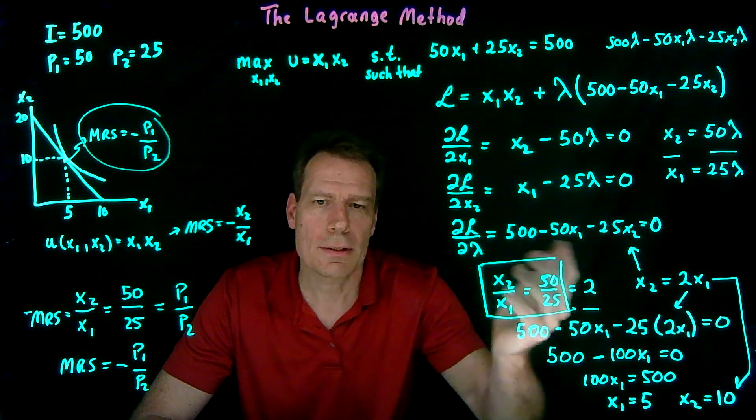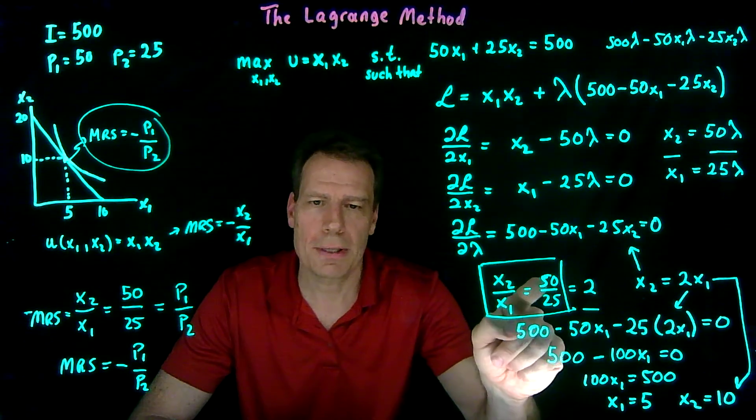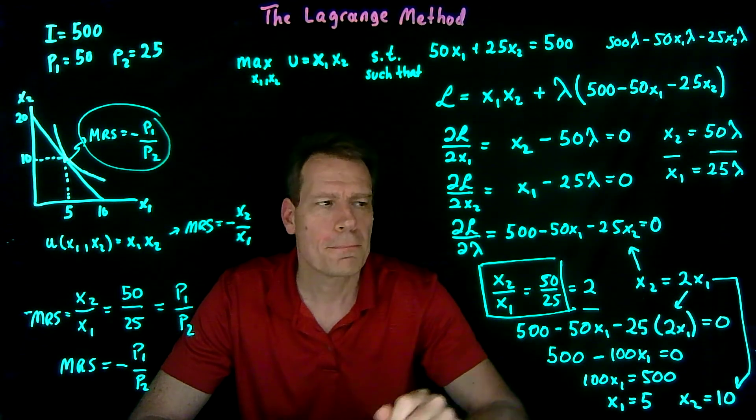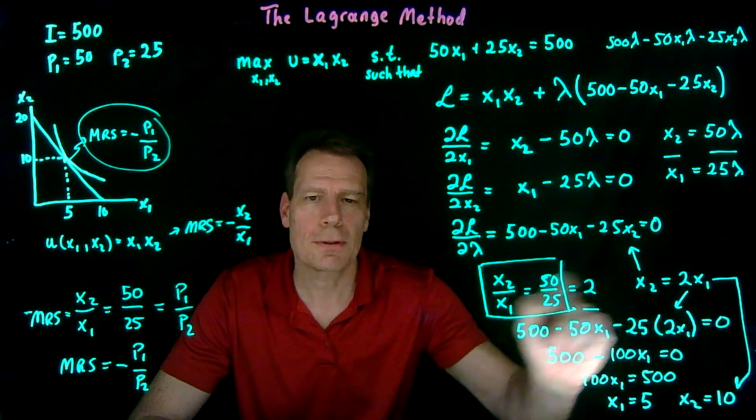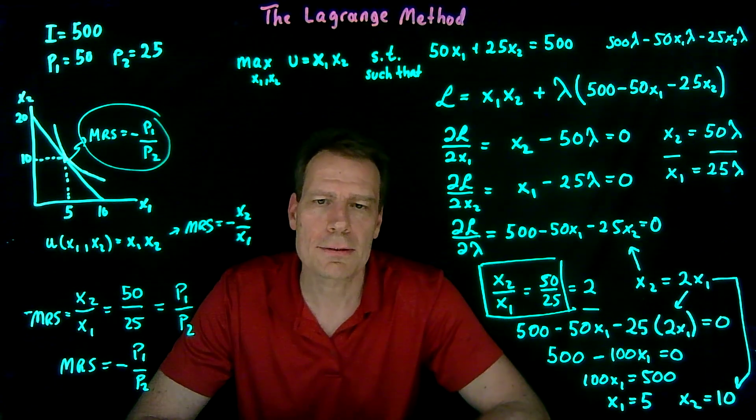So as you're solving this Lagrange problem, you're actually getting at some point to the place where it says the marginal rate of substitution is equal to the ratio of the prices. You use that to figure out this and then you use the budget constraint to find the final answer.